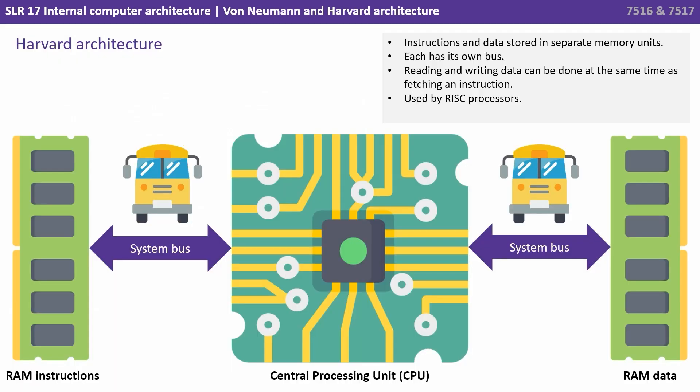Let's compare this to the Harvard architecture. Here, instructions and data are stored in separate memory units. Each has its own bus. Reading and writing data can be done at the same time as fetching an instruction. This is commonly used by RISC processors.